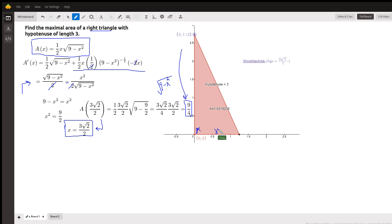And in fact, if this is X, then the square root of nine minus X squared, it turns out if this is three radical two over two, we get three radical two over two for this leg also. So it's a 45-45 right triangle.